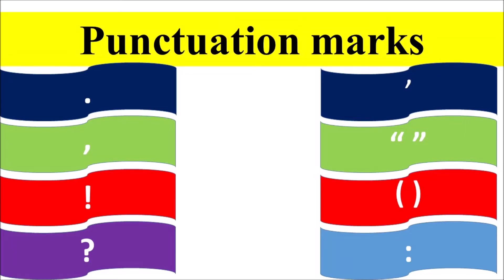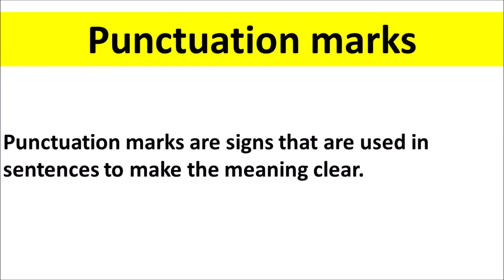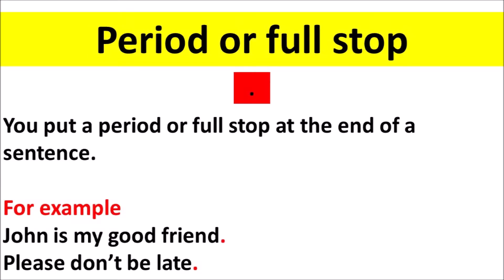Punctuation marks are signs that are used in sentences to make the meaning clear. Period or full stop: you put a period or full stop at the end of a sentence. For example: 'John is my good friend.' 'Please don't be late.'